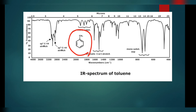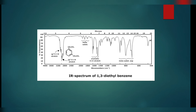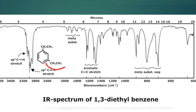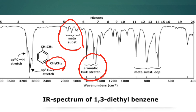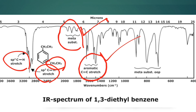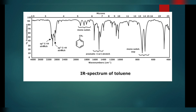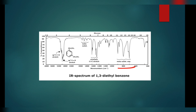Moving on, we have a meta-substituted compound. This peak is for the meta-substitution, and again these other peaks are for the aromatic C=C stretch. This graph is similar to the previous one — we have an aromatic C=C stretch, an sp3 C-H stretch, and an sp2 C-H stretch — but here we have a meta-substituent peak instead of a monosubstituted peak.